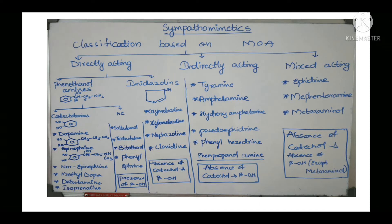Mixed acting drugs act by both direct and indirect mechanisms. Examples are ephedrine, mephentermine, and metaraminol. In these drugs there is an absence of catechol ring and also absence of beta-hydroxy group, except in metaraminol. The catechol ring is present only in catecholamines: dopamine, epinephrine, norepinephrine, methyldopa, dobutamine, and isoprenaline. This completes the classification based on mechanism of action.